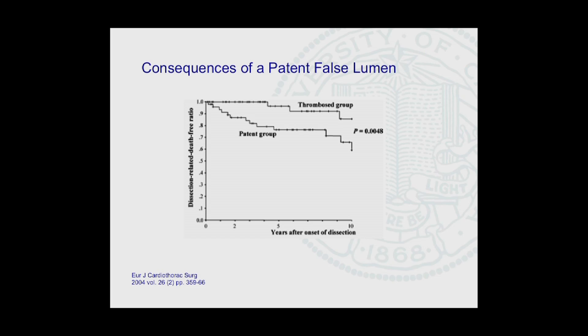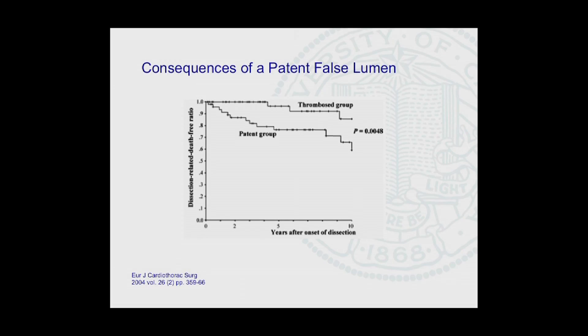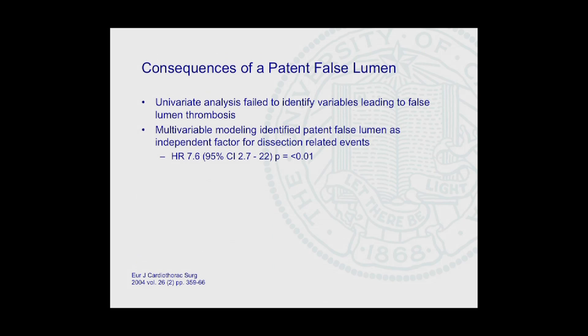Their key finding was shown in Kaplan-Meier curves for dissection-related mortality: the lower curve represents patients with a patent false lumen on imaging, and the upper curve the thrombosed group — a statistically significant difference out to 10 years. The authors note that overall mortality was not different between these two groups, but dissection-related mortality — deaths attributable to aortic rupture or aneurysm — was far better in the thrombosed group. On multivariate modeling, they were unable to identify any univariate variable that predicted development of false lumen thrombosis, but the presence of a patent false lumen yielded a hazard ratio of 7.6 for developing dissection-related late events.